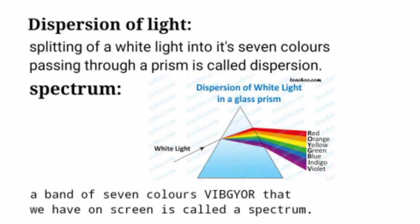Here we have a prism. A white light striking the first surface, splitting into seven colors, then again emergent out. We take this whole spectrum as VIBGYOR.